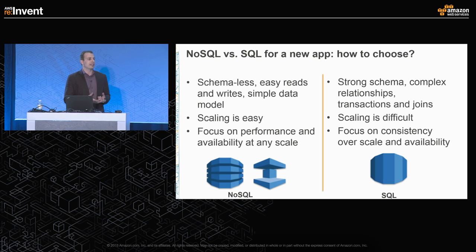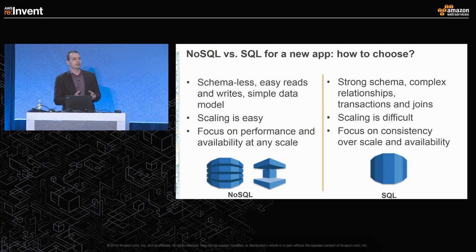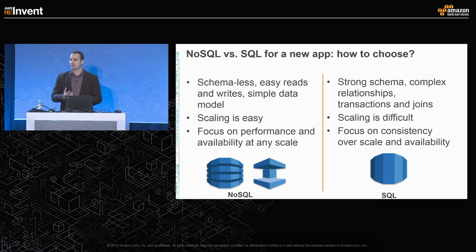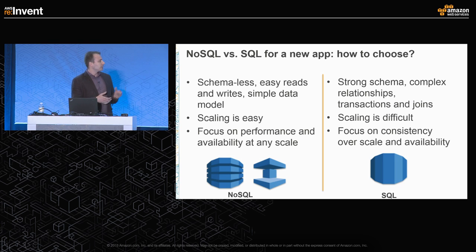NoSQL as a category gained a lot of popularity in recent years, providing a response to some of the limitations of traditional SQL-based databases. Mainly those limitations are the need for a rigid schema — a lot of modern data is unstructured and comes from different sources — and the other is the need for high and consistent performance and availability at scale. These are limitations of traditional SQL databases, and this is what the NoSQL category came to address.